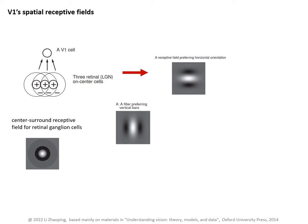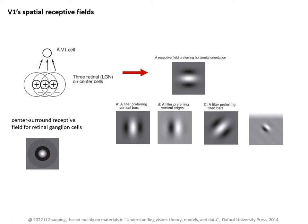Another spatial arrangement can make another V1 cell be excited by a vertical white bar, or by a vertical contrast or edge between white and black, or by a tilted white bar, or another tilt at a smaller edge. So V1 neurons are often called bar or edge detectors, and their responses are tuned to orientation and also to scale of visual inputs.